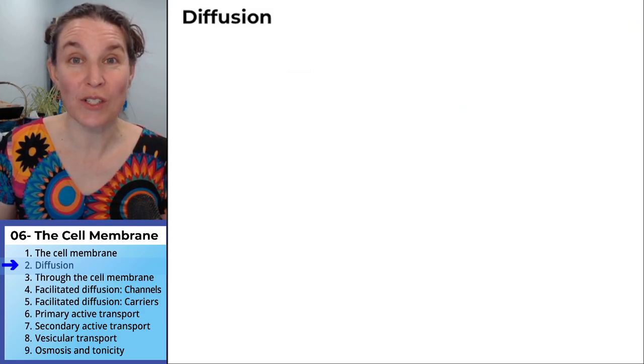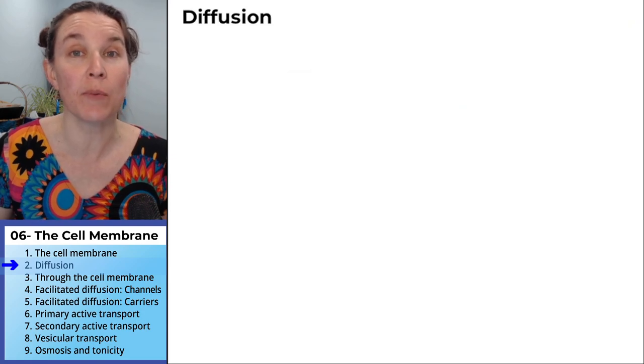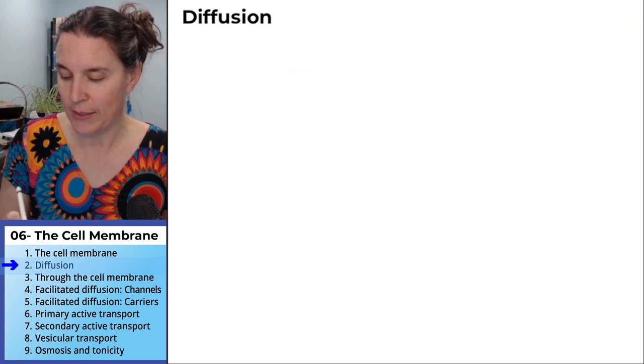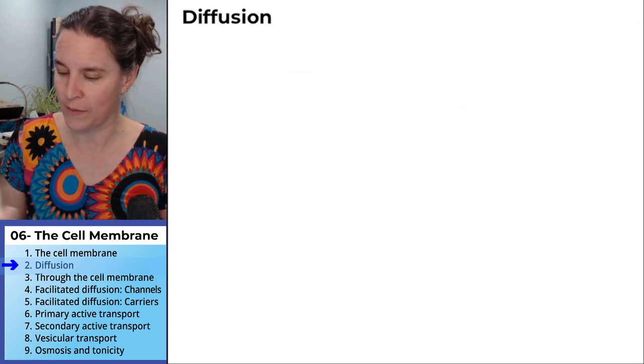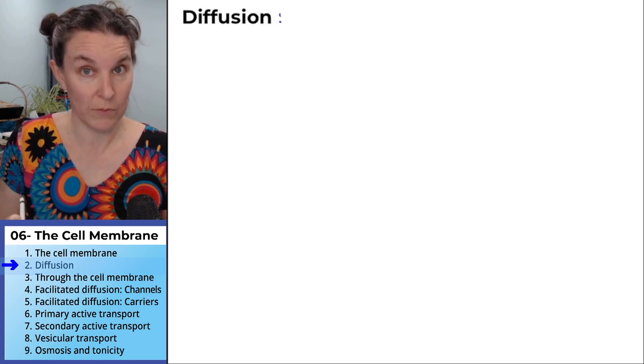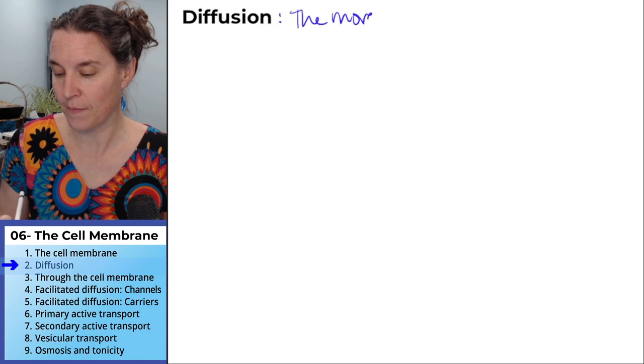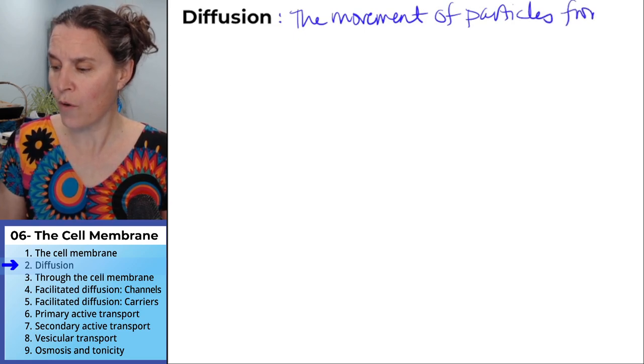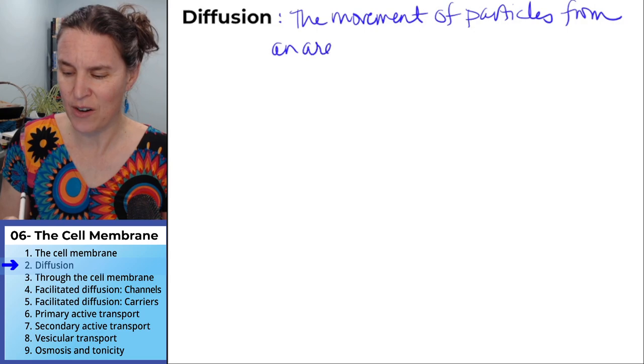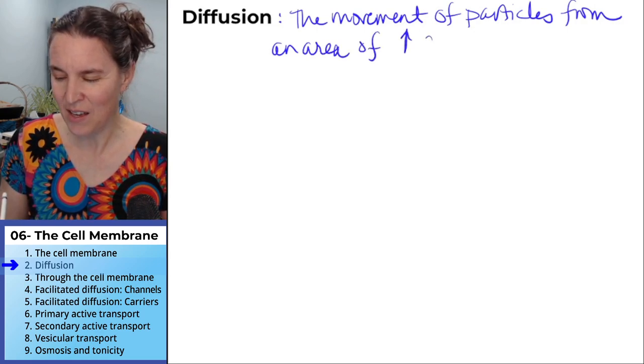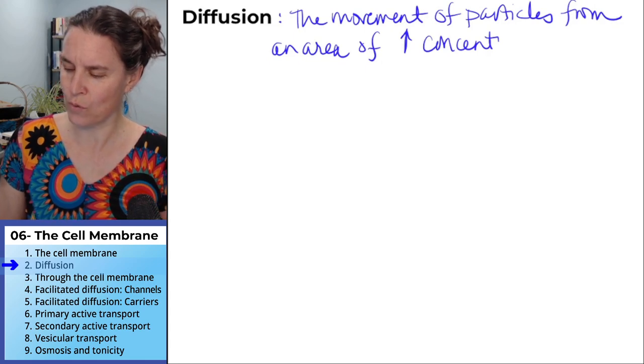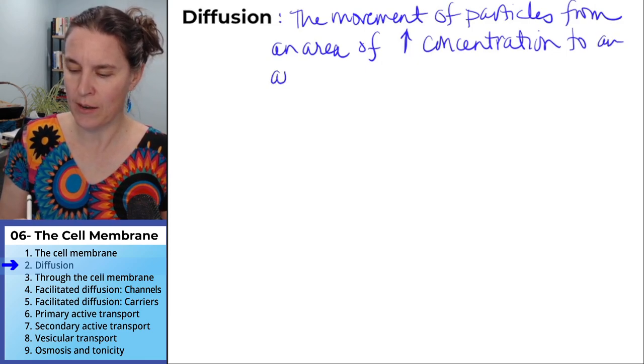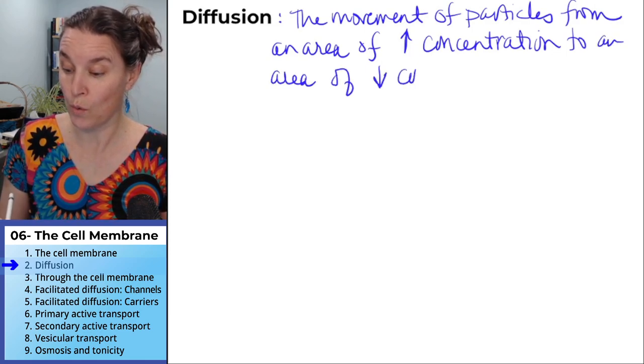The easiest way for particles to get into or out of the cell membrane is just simple diffusion, and not everyone can do this. So let's get a definition of diffusion. Diffusion is the movement of particles from an area of high concentration to an area of low concentration.